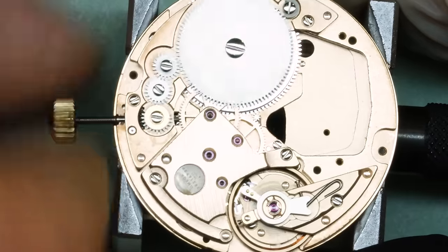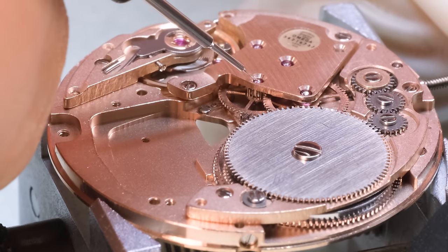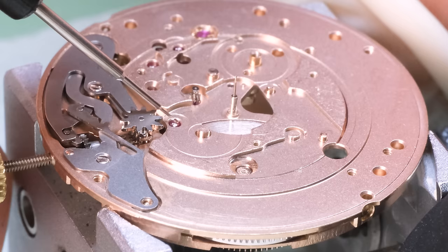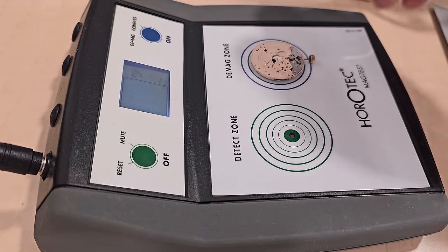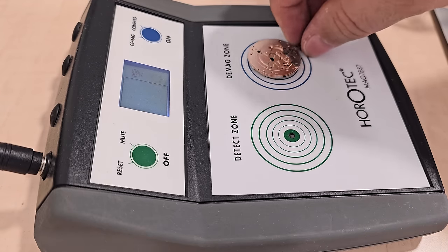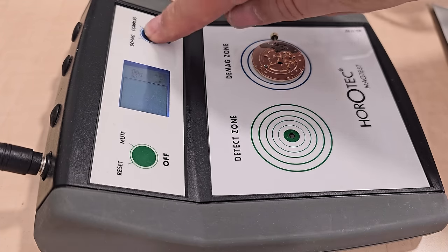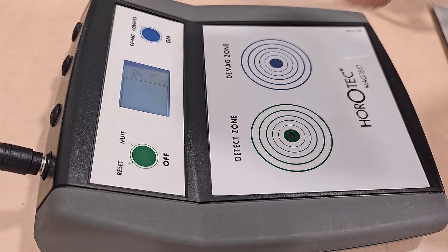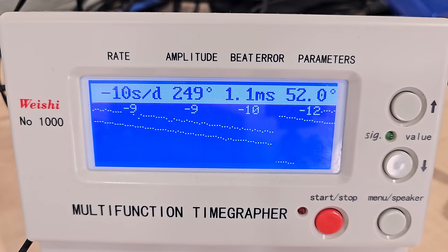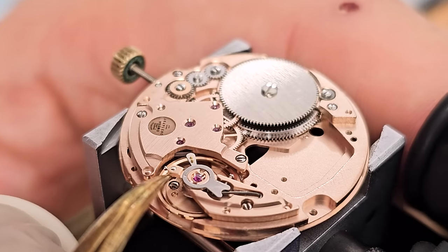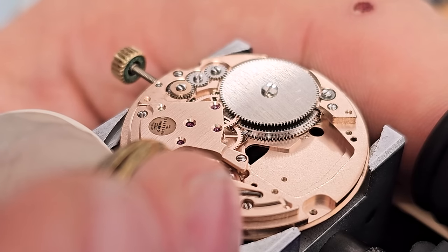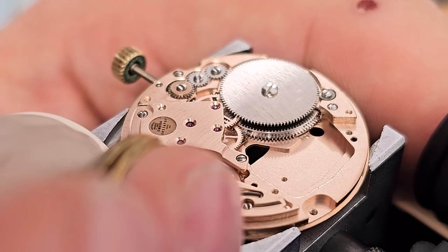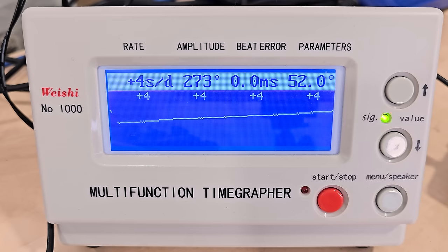All right. We're going to lubricate all the jewel holes, and then we're going to demagnetize the watch and then put it on the time grapher. And that looks fairly all right. We're going to adjust the beat there a little bit on the rate, and then see how the amplitude checks out. This movement does have an adjustable stud holder, so it's easy to adjust the beat there. And in the end, yeah, we're going to be okay with this.